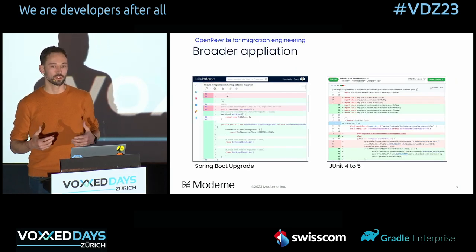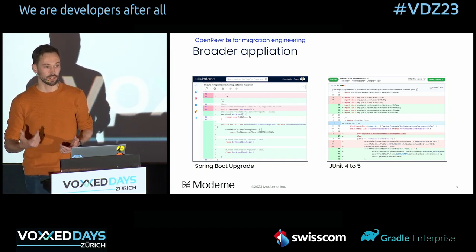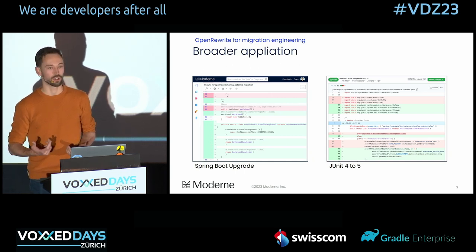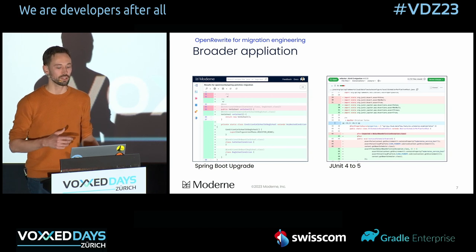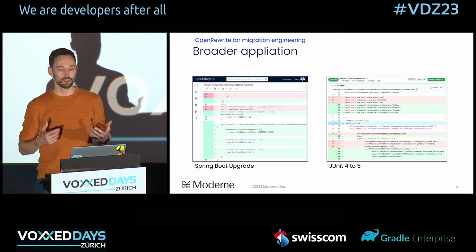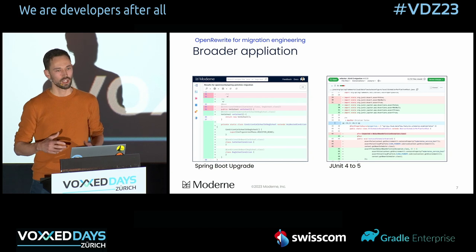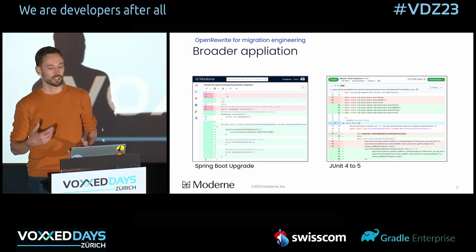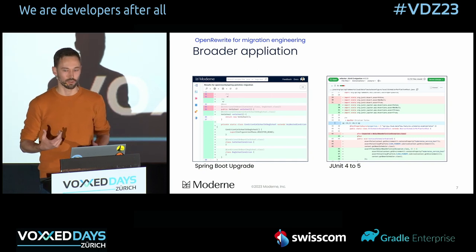Later, the same developers moved on to work on Spinnaker. And while trying to onboard teams and organizations there, they found that teams often struggled with the same outdated libraries and frameworks. To help these teams adopt the latest versions, they applied a different set of transformations through the same lossless semantic tree parser. This allowed them to quickly reduce technical debt, bringing teams from Spring Boot 1 to 2 and from JUnit 4 to JUnit 5. The project has since been open sourced, with the company behind it committed to making all recipes available under the Apache license for open source software.